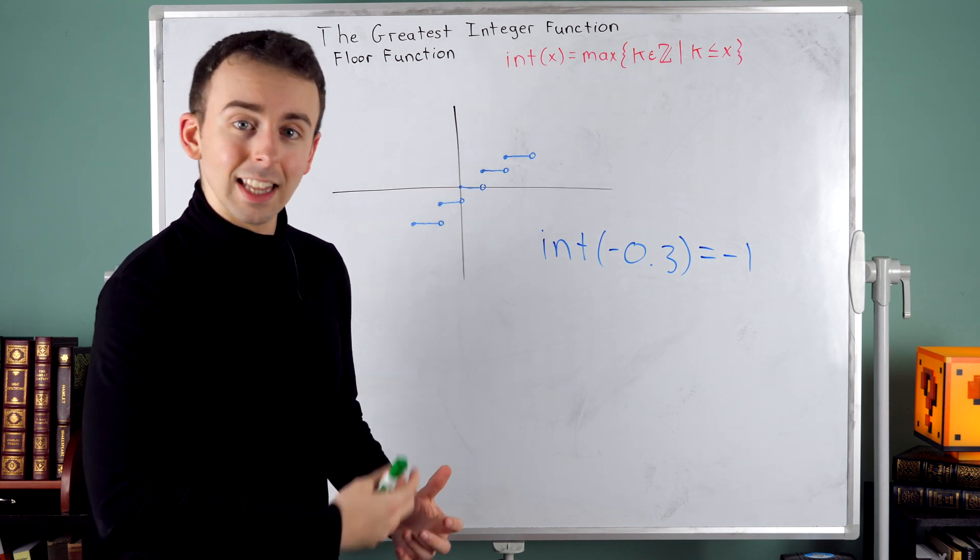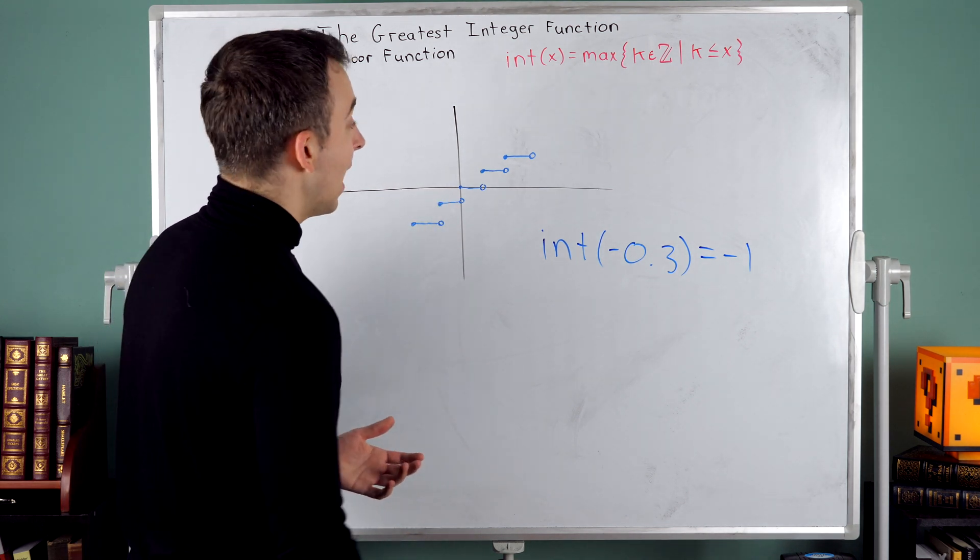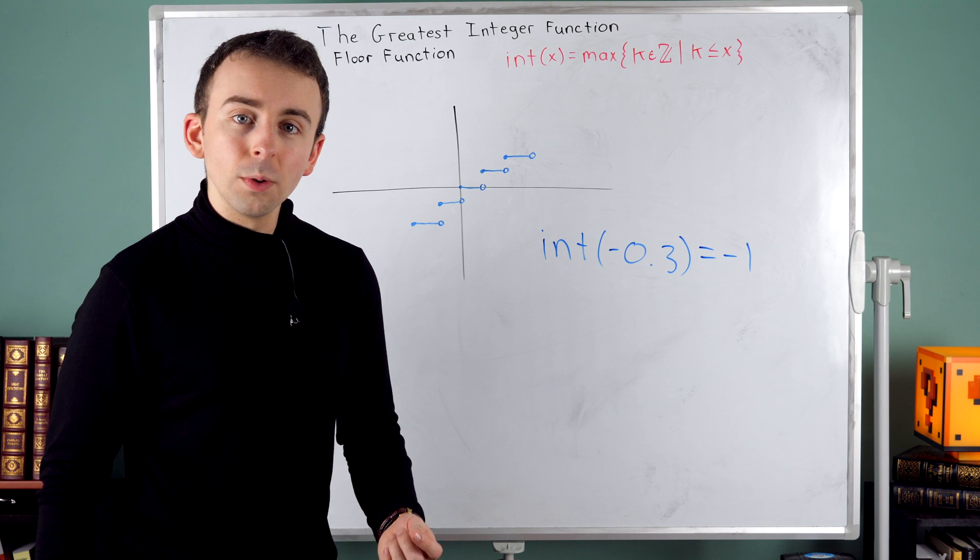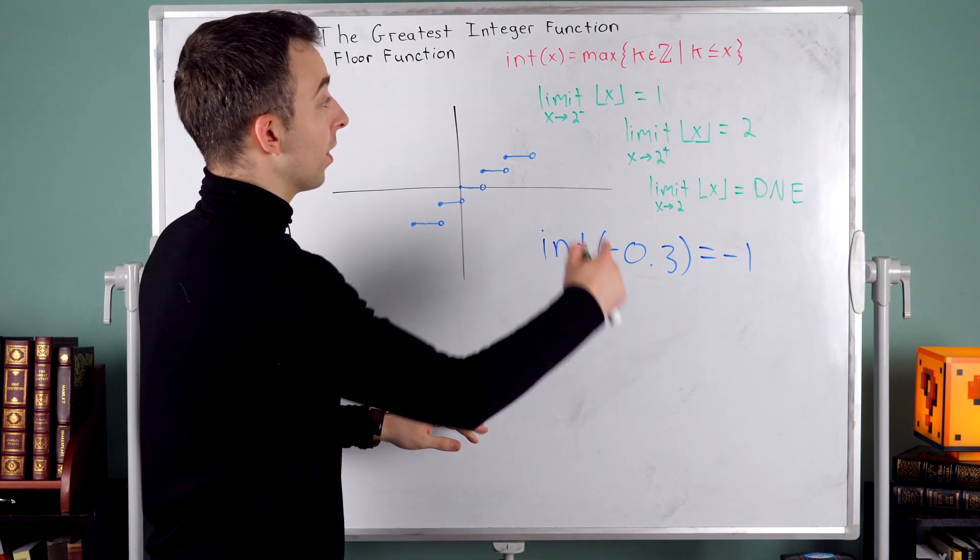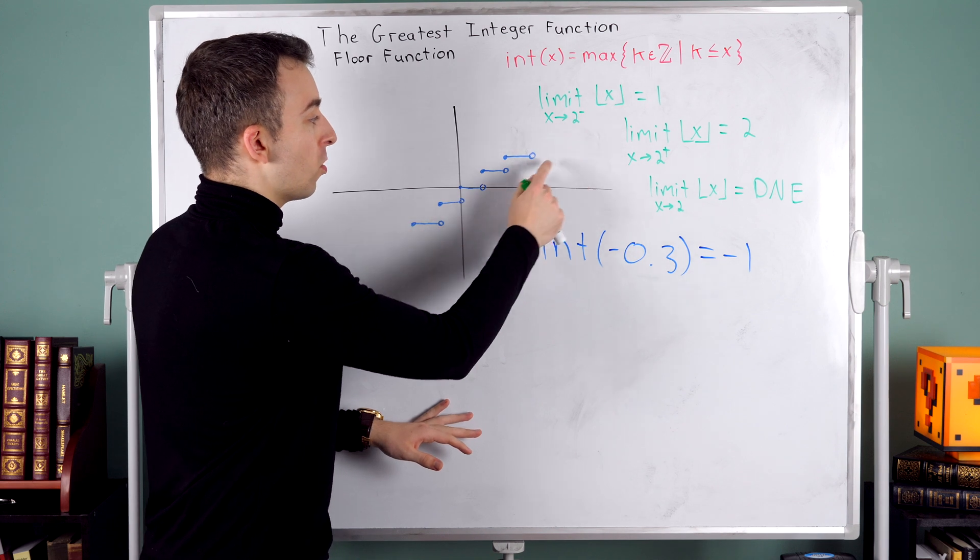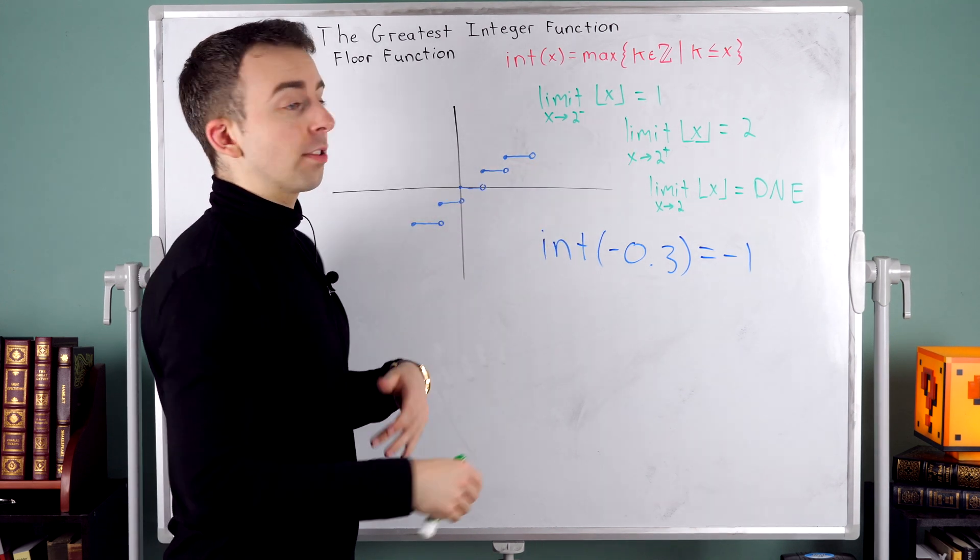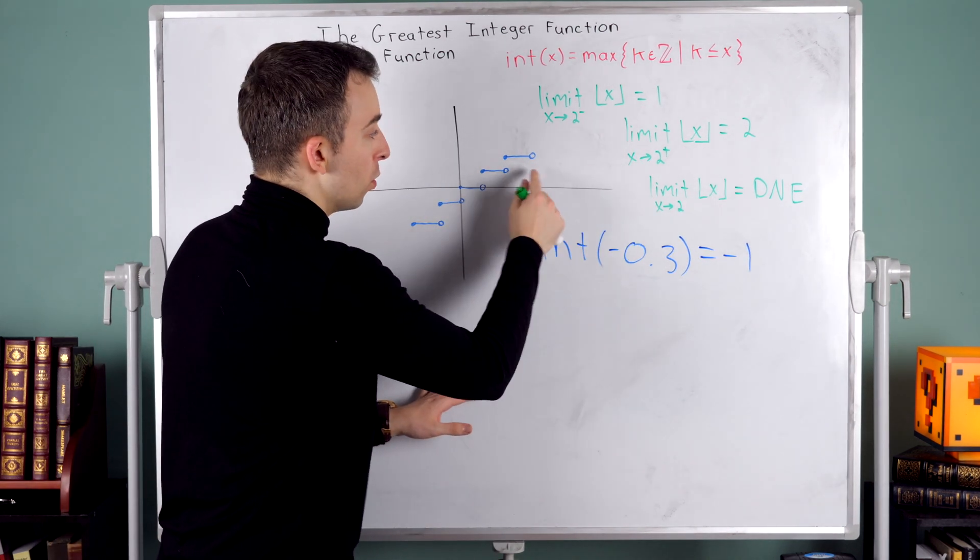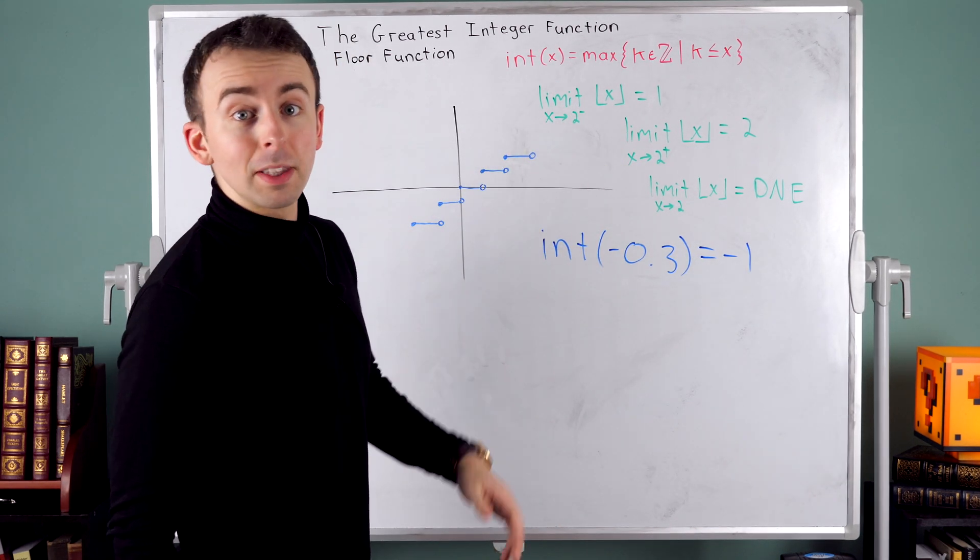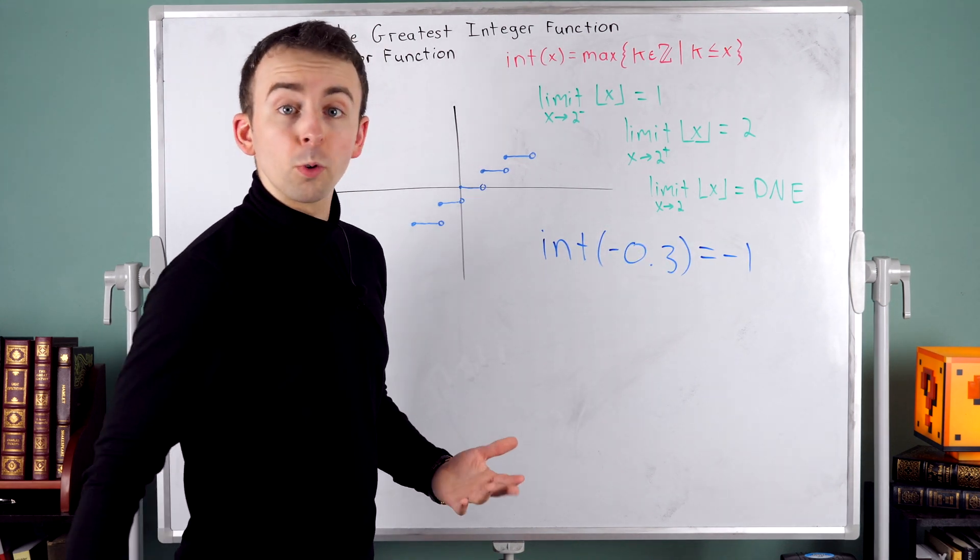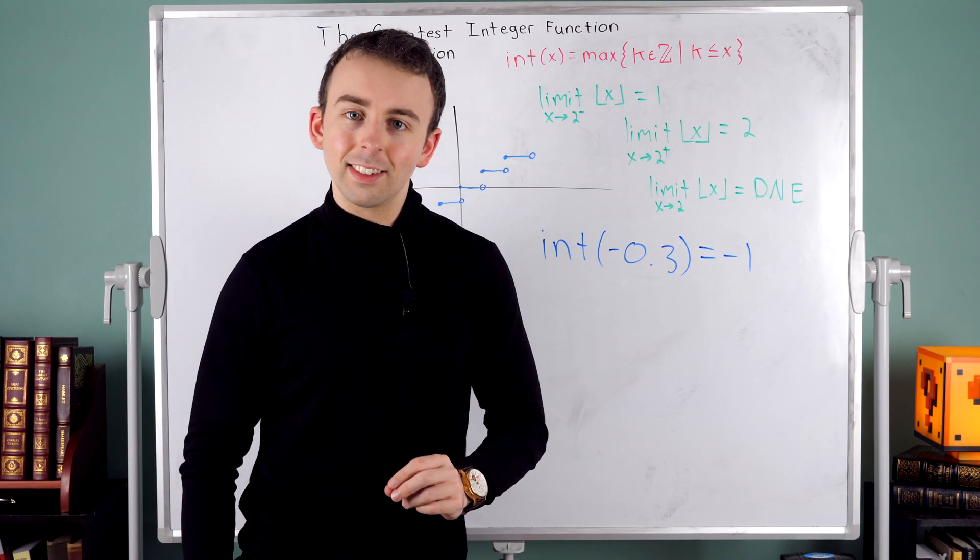And so the two sided limit, which we would just write as the limit of the function as x approaches two, doesn't exist. There's what I just said written down: the limit of the function as we approach two from the left is one. But as we approach two from the right, the limit is two. Since the one sided limits are different, the limit simply as x approaches two does not exist.